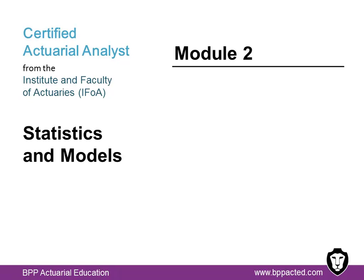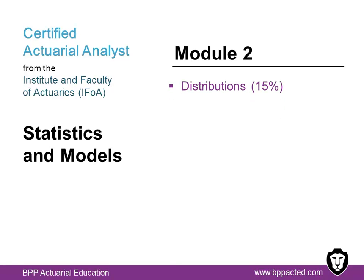Module 2 covers statistics and models. It's a two-hour exam plus 15 minutes of admin time administered by Pearson VUE, consisting of 65 multi-choice questions, with a recommended 125 to 150 hours of study. This is the largest syllabus of all the modules and covers 13 topic areas. The main features of principal discrete and continuous distributions, for example the binomial and normal distributions — you should be able to define and apply these distributions.